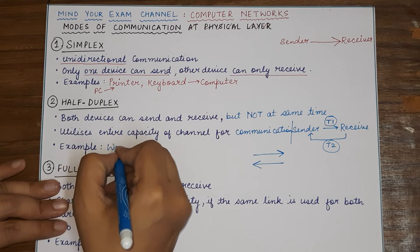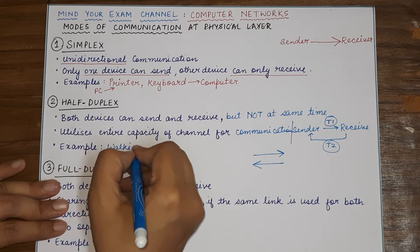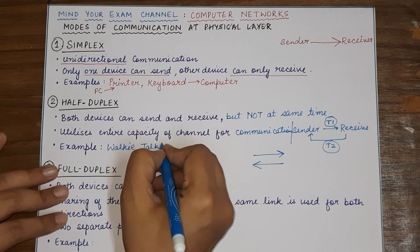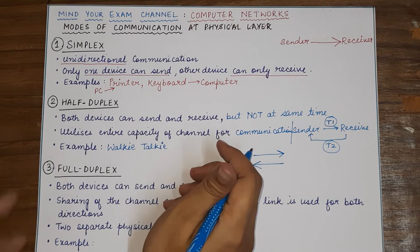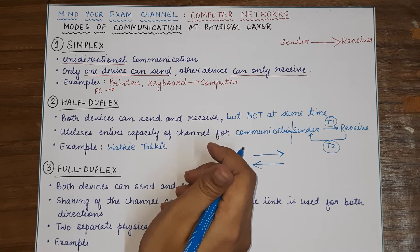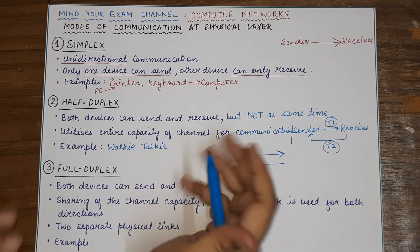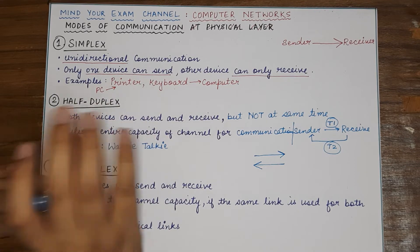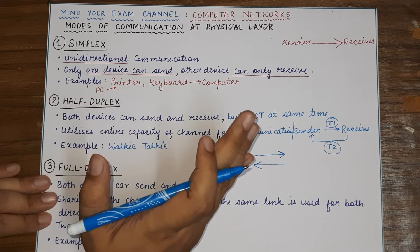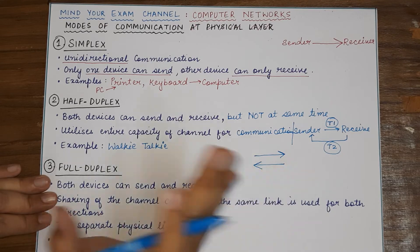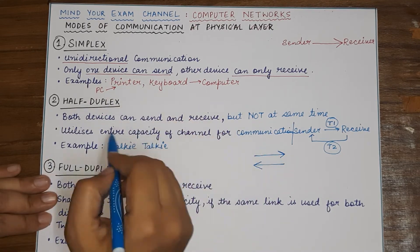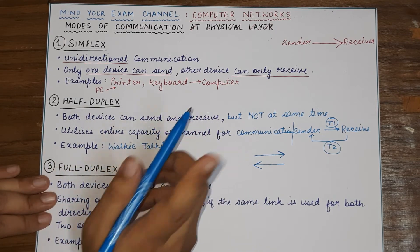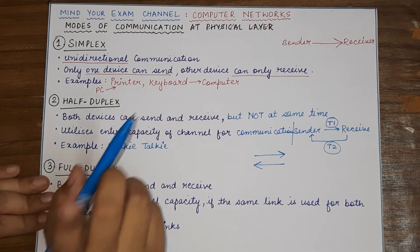And the best example for half-duplex is a walkie-talkie. You might have seen a policeman talking on a walkie-talkie when they actually say something and then they say over and out. And that is basically allowing the other person, the other end to now send information. So, once they send a message, they inform the other person, which allows the other person to then communicate because the walkie-talkie is based on this half-duplex communication mode and only one side communication can happen at one point.